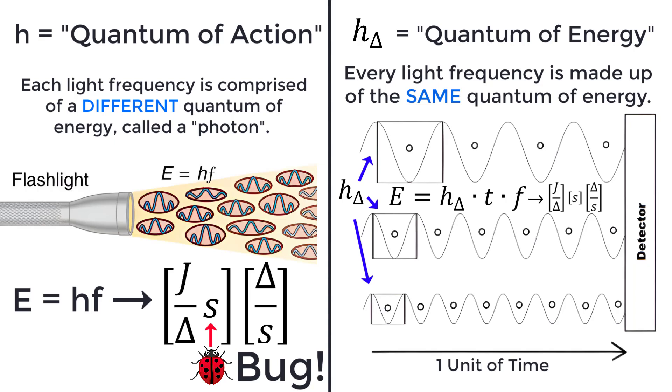The term s or one second inside the units of Planck's constant is a bug. In Fractal Woman's modified unit analysis, this bug is fixed by decoupling the time parameter from Planck's constant. This new Planck's constant is the minimum energy or quantum of energy. Every light frequency is made up of the same quantum of energy.